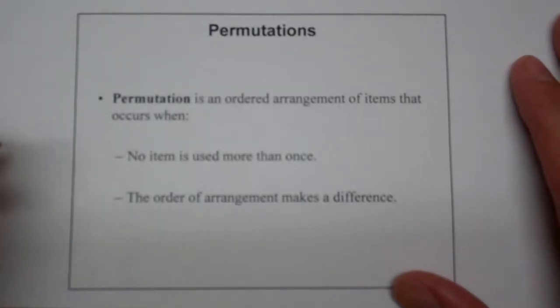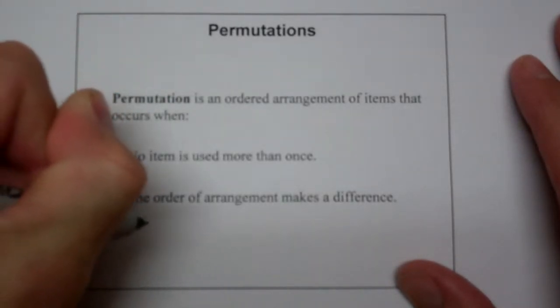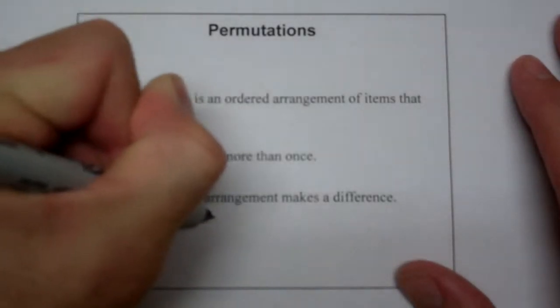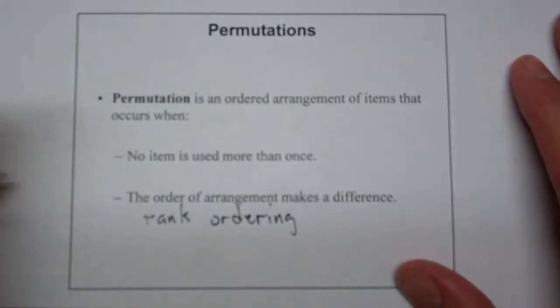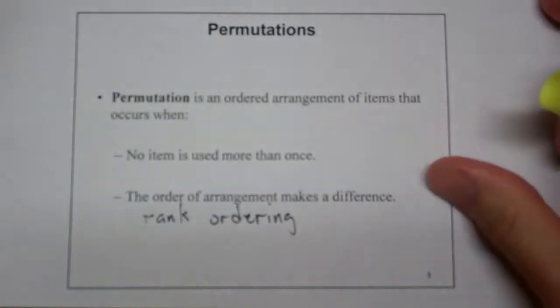There is a huge difference like in a NASCAR race. Who comes in first, second, third, fourth, right? Points, payouts, all of those things. So when you have a rank ordering, then what you're talking about is a permutation.